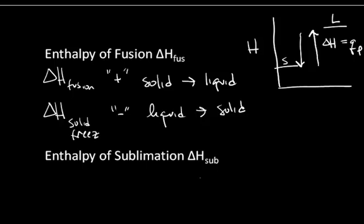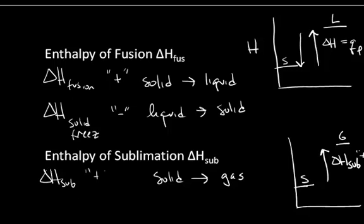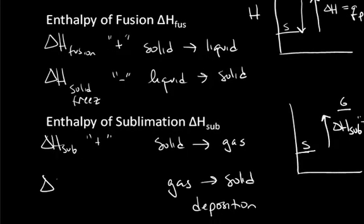We also have the enthalpy of sublimation — the process when a solid sublimes, going directly to a gas. The solid is of lower energy than the gas, so the solid to the gas is going to be an increase in energy. The change in enthalpy of sublimation is going to be a positive change, equal to the heat flowing into the system at constant pressure — so it's an endothermic change. Going from a gas back to the solid is called deposition, and the change in enthalpy of deposition is a negative value because energy needs to leave the system for the gas to re-solidify. The magnitude would be the same; the sign would be different.